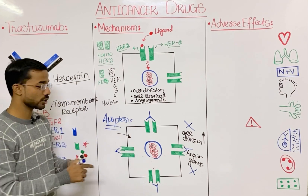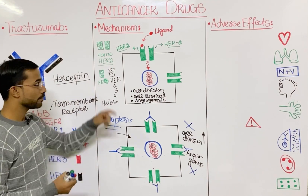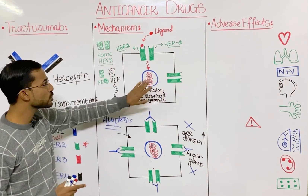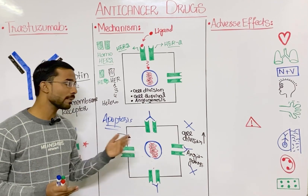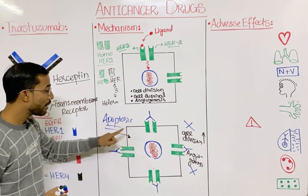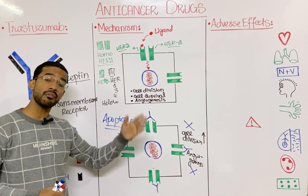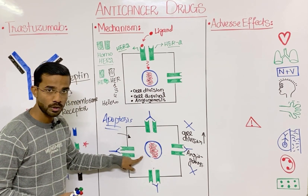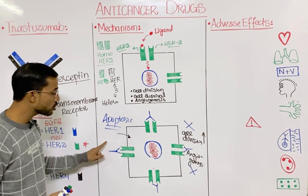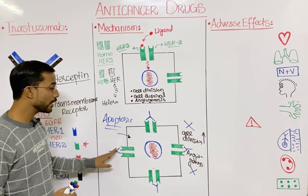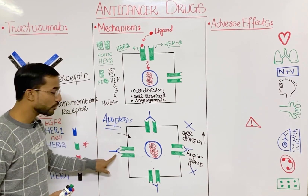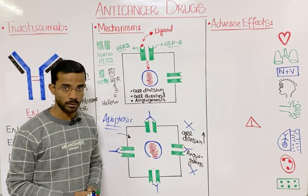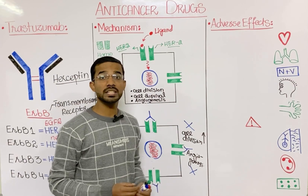With no signal transduction, there is also stoppage of cell division, and ultimately the cell is destroyed by apoptosis. To summarize: in a normal situation, there is normal HER2 expression and normal cell proliferation and angiogenesis. But when tumor cells start overexpressing HER2, a lot of signal transducts inside the cell. Trastuzumab prevents HER2 dimerization, stops signal transduction, and ultimately the cell goes toward death — apoptosis. This is the mechanism of trastuzumab.